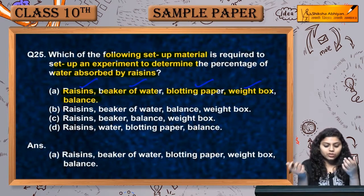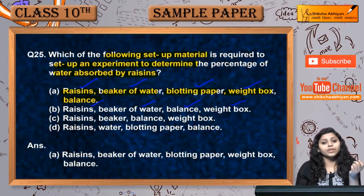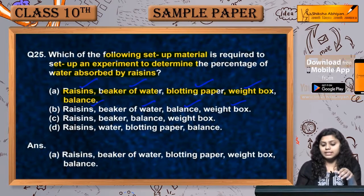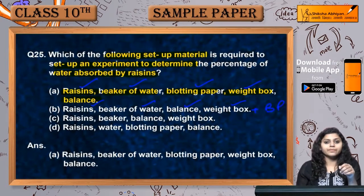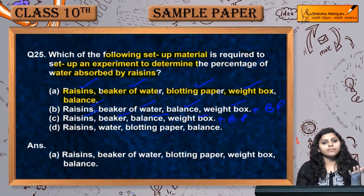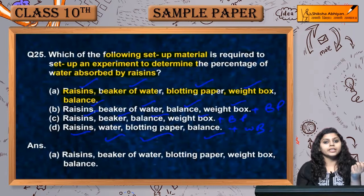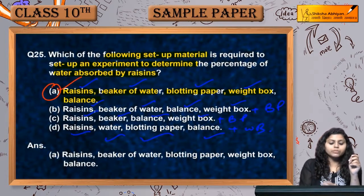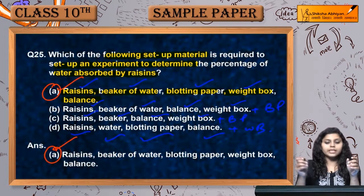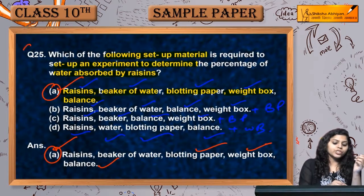Next option is raisins, beaker of water, balance or weight box - yeh sahi hai, but is ke saath hame blotting paper bhi chahiye. Next is raisins, beaker, balance, weight box - yes, is ke saath blotting paper bhi chahiye, water bhi chahiye. Raisins, water, blotting paper, and balance weight box bhi chahiye. So first option mein sabhi diye hain, so hum first option ko choose karenge. This was question number 25.